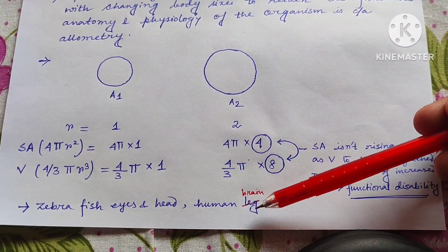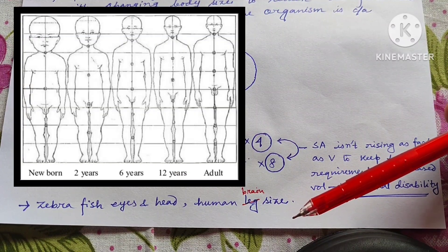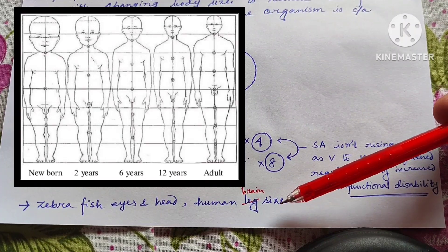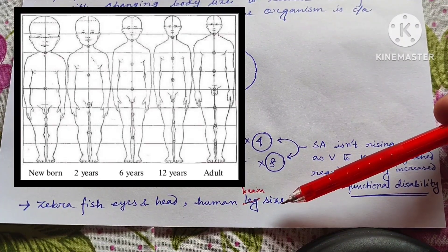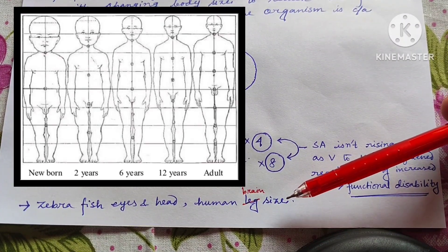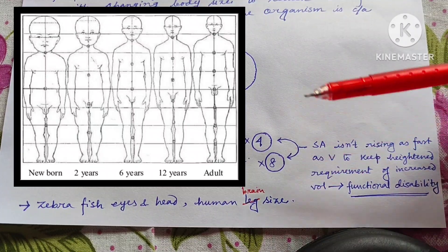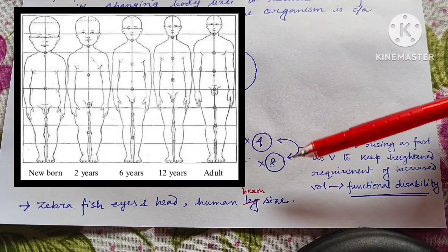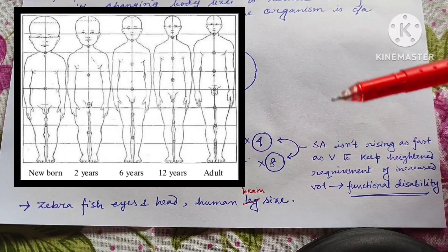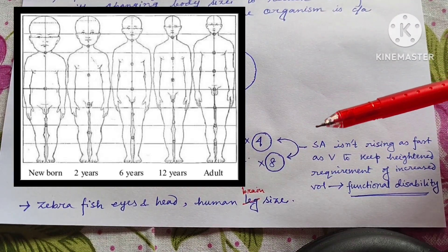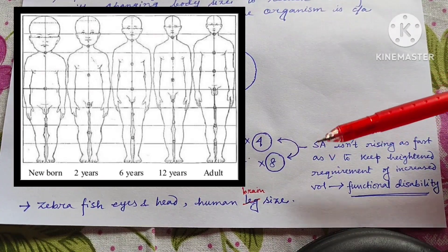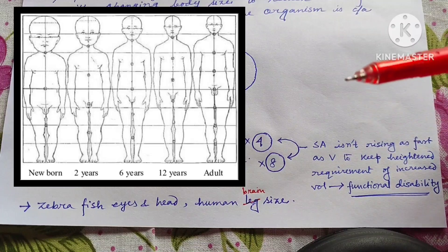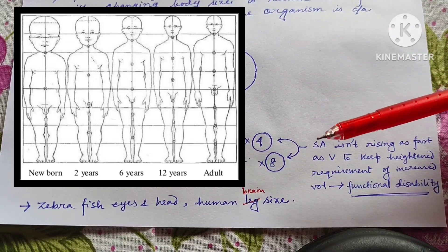Let's take an example. We know that the human brain size, the proportion of human brain size in fetus or in fetal condition is quite larger than in adult condition. In fetus we have a larger brain than in adult condition. So that means our brain size or head size has not increased isometrically according to our changes in overall body size. Rather, it has increased allometrically. Why?